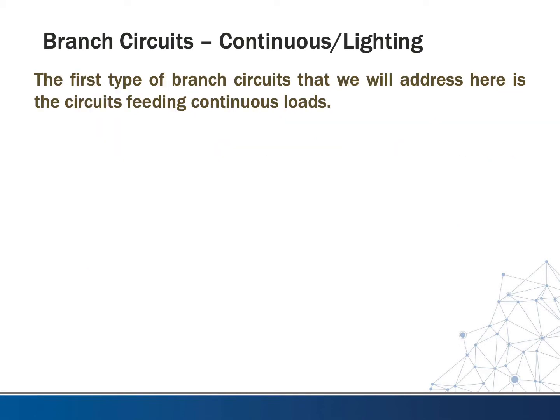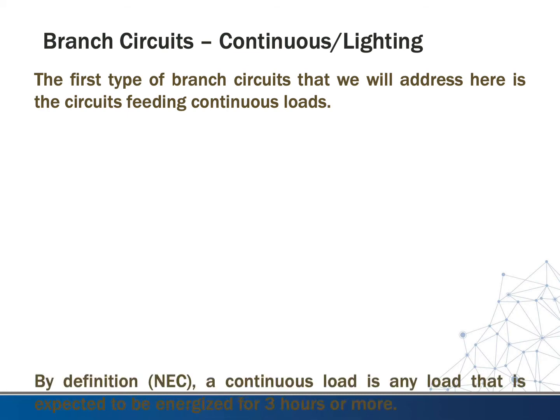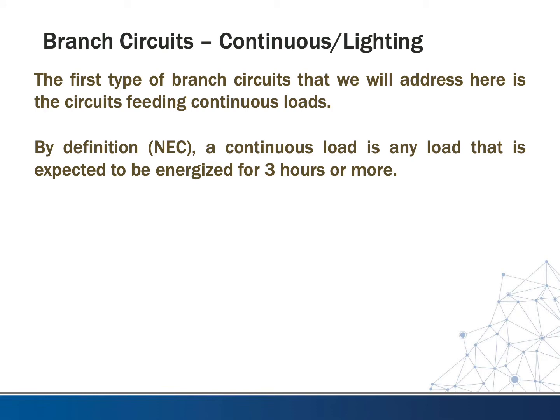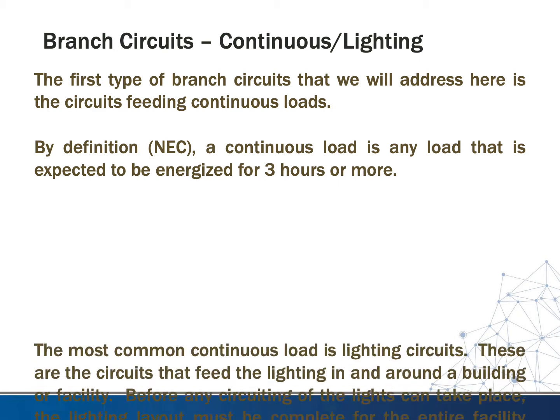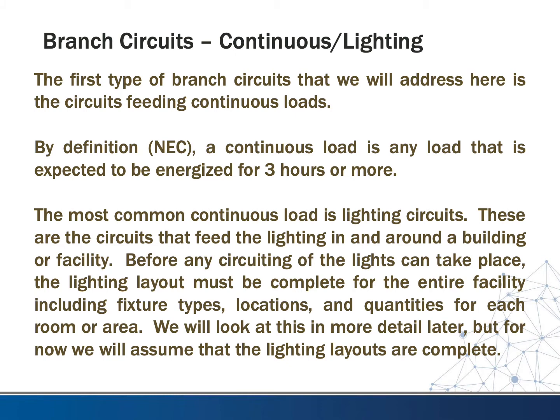The first type of branch circuit we'll address is circuits feeding continuous loads. By definition from the National Electrical Code, a continuous load is any load expected to be energized for three hours or more at a time. The most common continuous load is lighting circuits — when lights are on in an office building, they're typically on for at least eight hours or more.